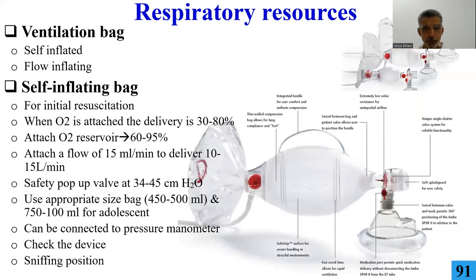We can use a self-inflated bag-valve-mask — the Ambu bag. This does not need flow and can provide good oxygenation if a reservoir is used. Without reservoir, connected to oxygen it delivers 30-80% oxygen; with reservoir, up to 100%. The flow should be 15 liters per minute.